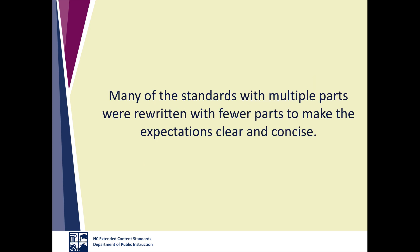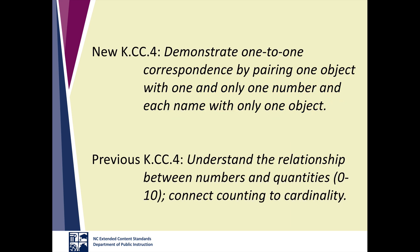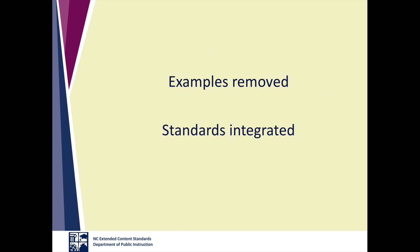Standards that had multiple parts were rewritten to be more clear and concise. For example, in mathematics, the counting and cardinality standard K.4 reads: 'Demonstrate one-to-one correspondence by pairing one object with one and only one number and each name with only one object.' The previous standard had three subsections dealing with the counting sequence, one-to-one correspondence, cardinality, the abstraction principle, and order of relevance principle. All of these expectations remain, but simplifying the language helps all stakeholders better understand the learning expectations.